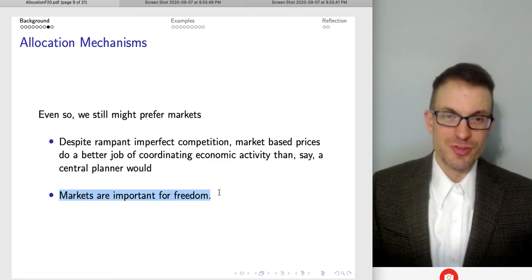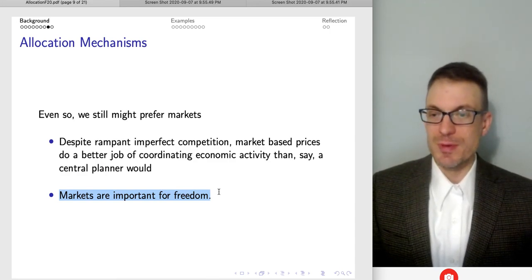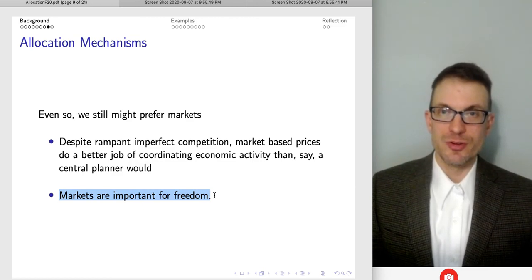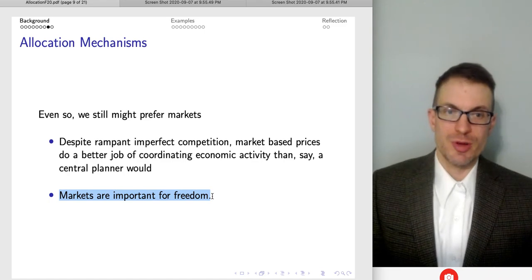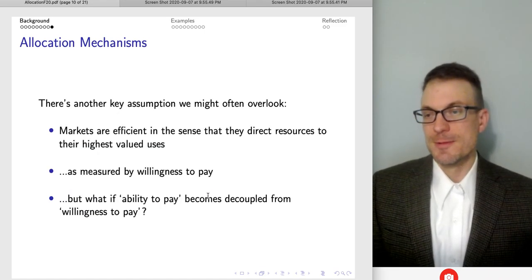The central planner just simply wouldn't have all the information about the signals that otherwise would have been captured in market-constructed prices. Market-constructed prices are saying everything about how much consumers want of the particular item, everything about how much it's costing to produce those items, and then more besides. It's bringing these together and determining where the equilibrium would be. That's a tall order for a central planner to be able to achieve. Also, markets are super important for freedom, the ability for buyers to find sellers, sellers to find buyers, and to be able to determine what to do with their resources. And for entrepreneurship, that's super important.